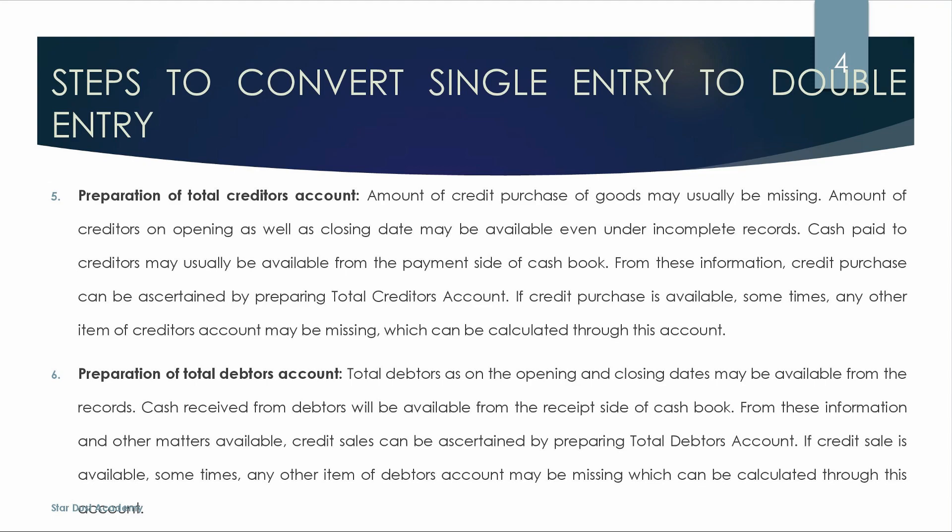Let's prepare the debtors account. We will prepare total debtors account. Cash received from debtors will be available from the received side of cash book. From these information and other matters available, credit sales can be ascertained. The credit sales can be considered from total debtors account. Creditors are prepared for credit purchase; debtors are prepared for credit sales.